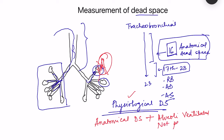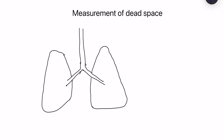Let us see how we measure anatomical and physiological dead space. First, let us talk about the anatomical dead space measurement. Anatomical dead space is measured by a method known as Fowler's method.